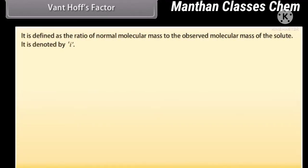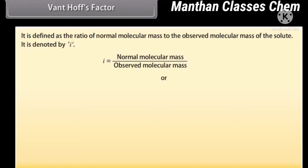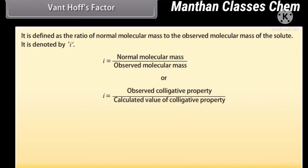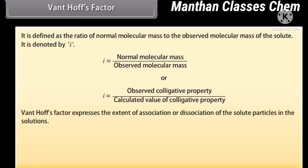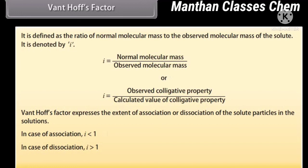Van't Hoff's Factor: It is defined as the ratio of normal molecular mass to the observed molecular mass of the solute, denoted by i. i = Normal molecular mass / Observed molecular mass, or i = Observed colligative property / Calculated value of colligative property. Van't Hoff's factor expresses the extent of association or dissociation of solute particles in solution. In case of association, i < 1; in case of dissociation, i > 1.